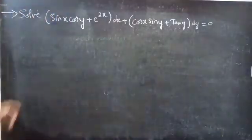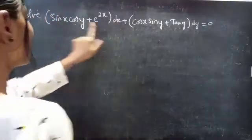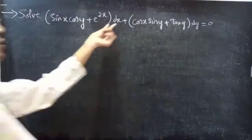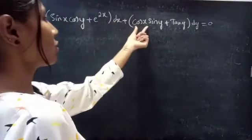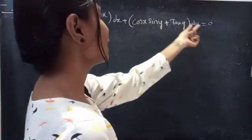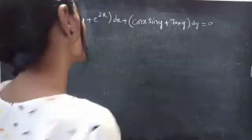Solve: sin x cos y plus e power 2x, into dx, plus cos x sin y plus tan y, into dy equals to 0.